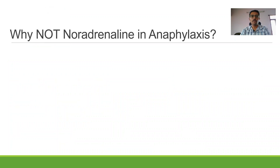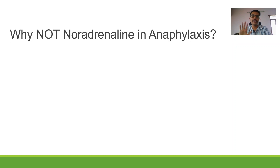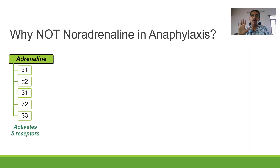Now the question: why adrenaline and why not noradrenaline? The answer is very simple — it is a single-line answer. Let us quickly review the different agonists and adrenergic receptors. There are five important adrenergic receptors: alpha-1, alpha-2, beta-1, beta-2, beta-3. Adrenaline activates all five adrenergic receptors. Noradrenaline activates only four — it does not activate beta-2. It activates alpha-1, alpha-2, beta-1, and beta-3.